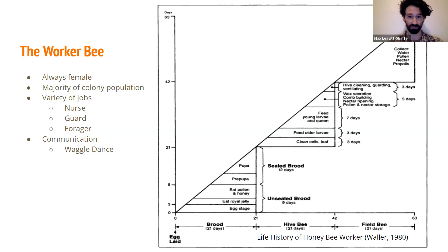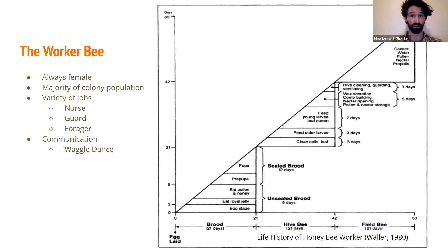Only in their old age will a worker become a forager, searching the countryside for resources and bringing back whatever the colony needs to survive. In many ways, the honeybee colony is run by the workers and not the queen — I feel like that's a pretty common misconception. You can look at it as a superorganism with each individual's behavior playing part in the greater whole. Workers are really good at communicating with each other through a behavior known as the waggle dance, which is one of the most interesting forms of insect communication.